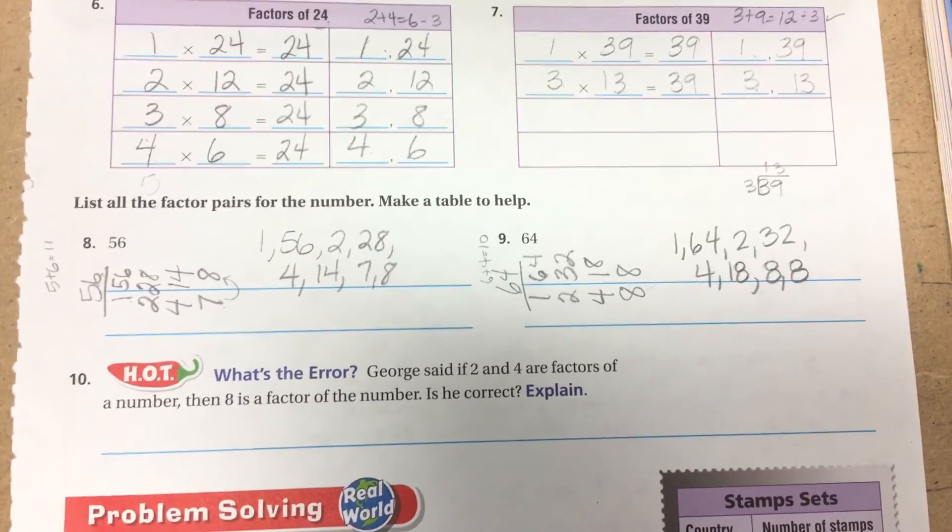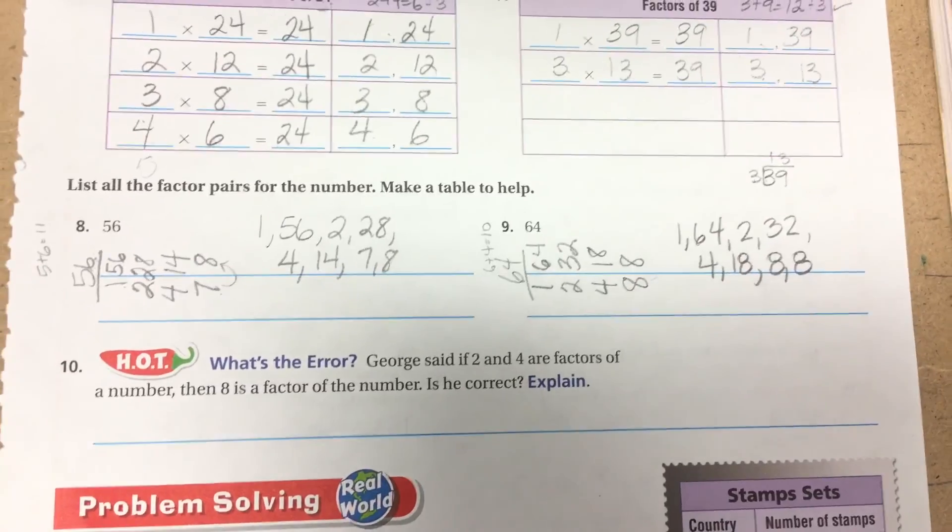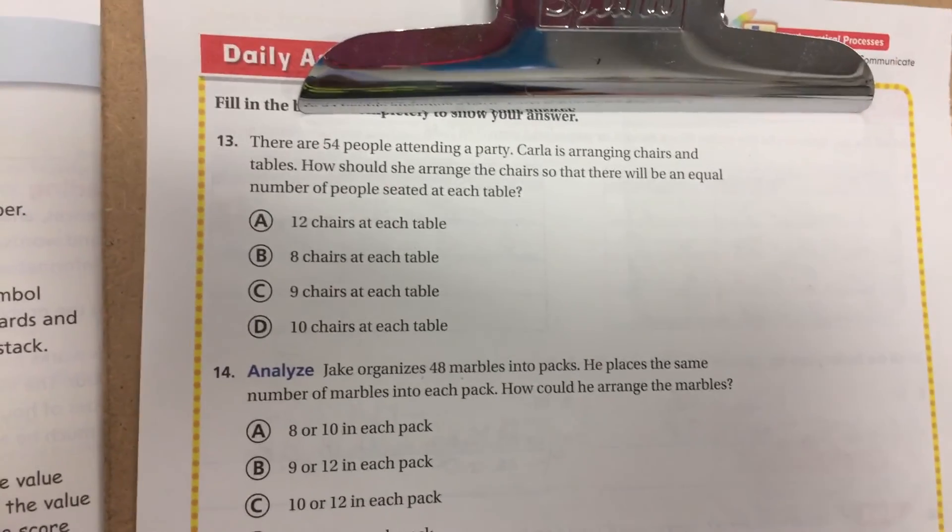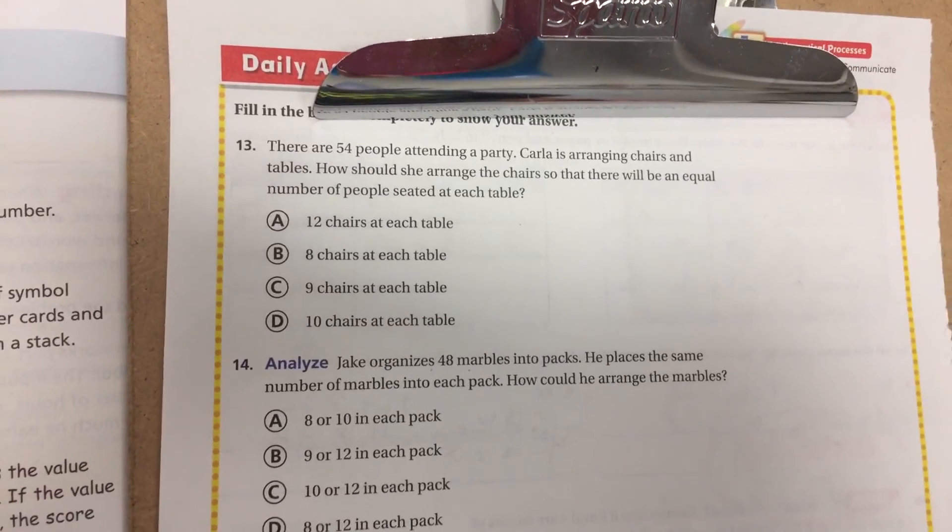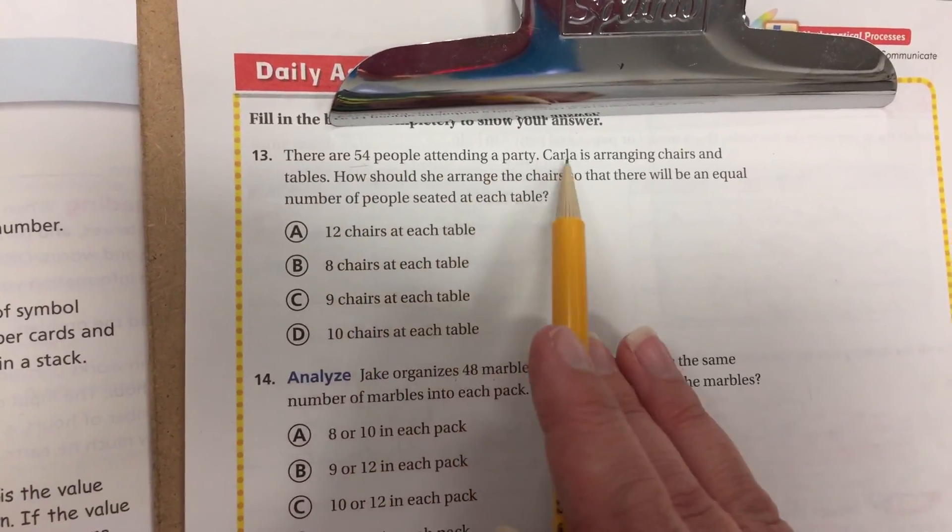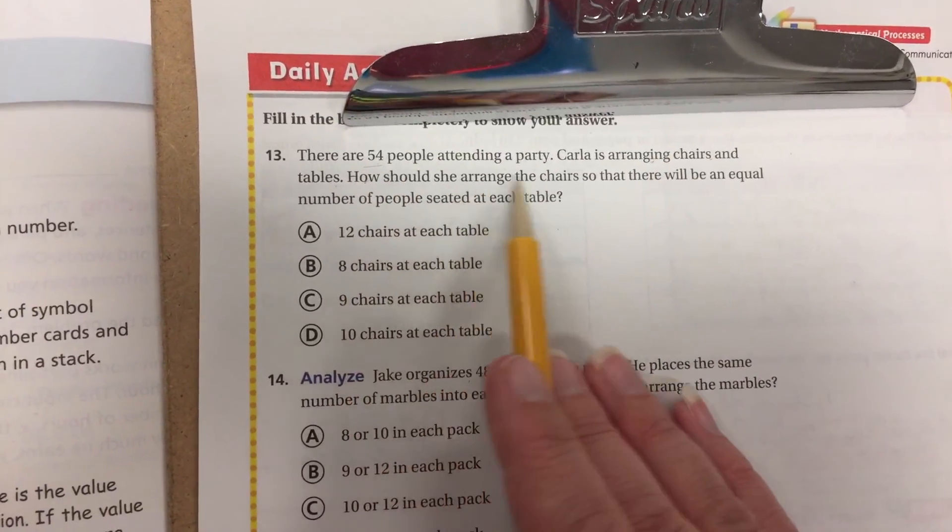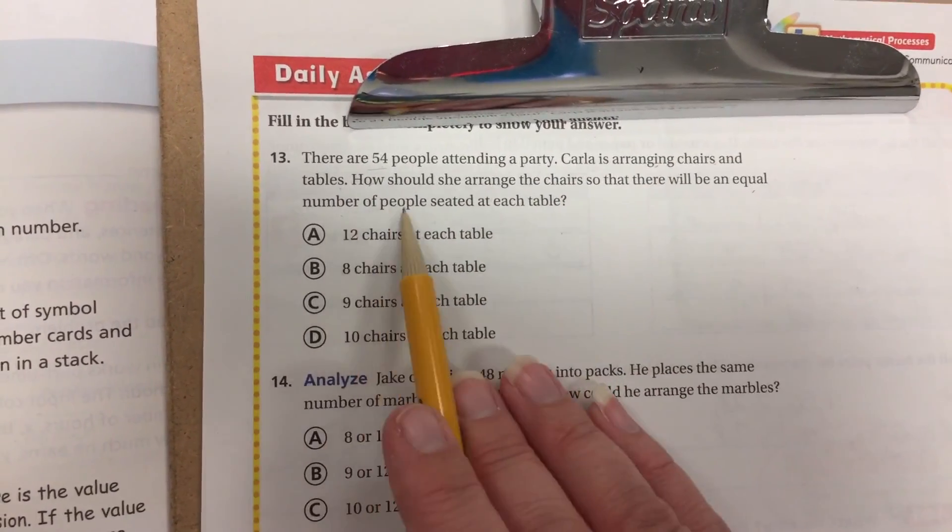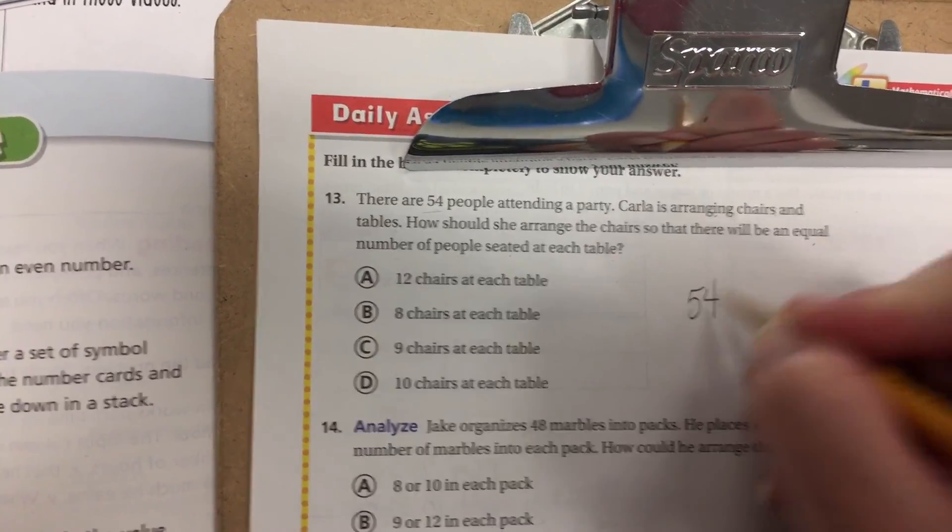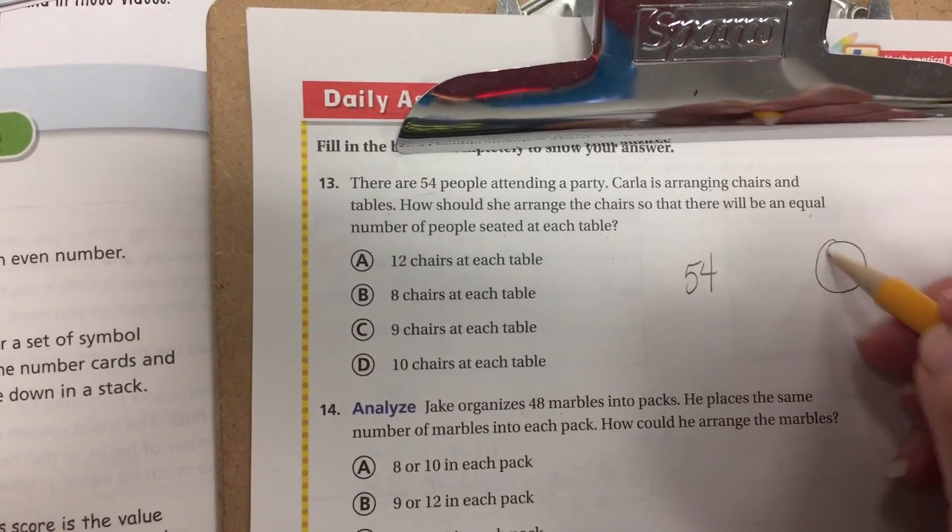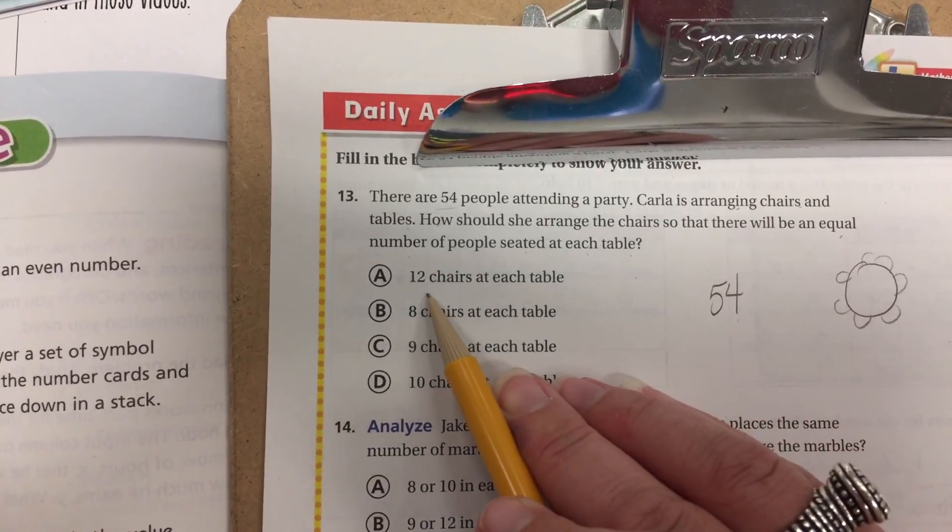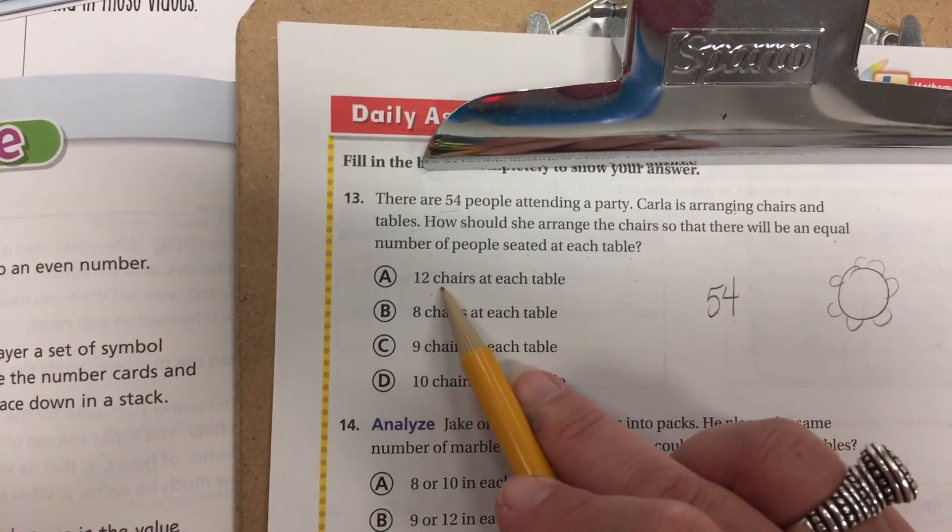Okay, what I'd like for you to do is now turn to page 294. Alright guys, we're on 294. This now is we're going to apply everything we've talked about, about divisibility rules, about everything, now working with our word problems. There are 54 people attending a party. Carla is arranging tables and chairs. How could she arrange the chairs so there would be an equal number of people sitting at each table?